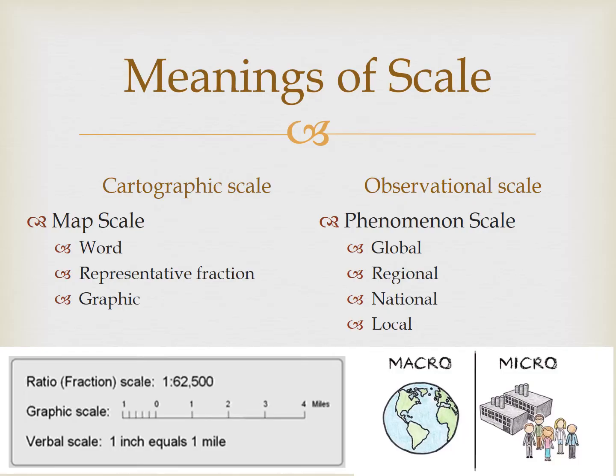Global is when something occurs more uniformly across large geographic areas, as we said with COVID. Regional can refer to continents like North America, or it could refer to subsections of continents like South Asia, but it's smaller than global and larger than just a single country. National scale refers to a phenomenon that's happening within a specific country. And local means within a country — it could be a specific state or province, or even a smaller area like a county, city, or neighborhood.